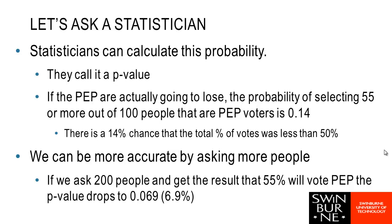You may have heard the term P-value before. A P-value is basically just a probability. For a statistician, the P-value is the probability that we would see this particular sample result, or one even more unusual, given a particular scenario. In this example, the P-value tells us the chance of getting 55 or more out of 100 people voting for PEP if in fact less than 50% of the population would vote for PEP. The P-value we get is 0.14, meaning there is a 14% chance that the population total is below 50% even though the survey said 55%.